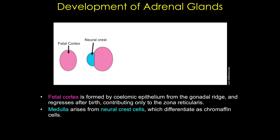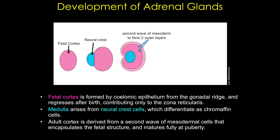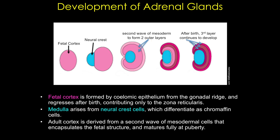Around six to seven weeks, the medulla arises from neural crest cells, which differentiate as chromaffin cells. And later in development, a second wave of delaminating cells subsequently migrates, proliferates, and forms a thinner definitive cortex. Cells in the fetal and definitive cortex have characteristics of steroid-producing cells, with very pale cytoplasm, which indicates the presence of lipid droplets. By postnatal month two, the fetal cortex has regressed, and the remaining definitive cells will organize into the recognizable three layers of the adrenal gland.